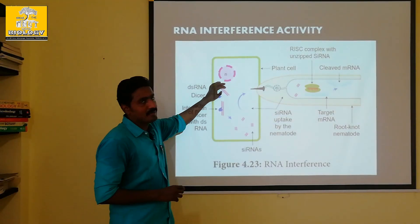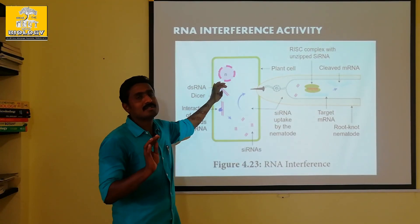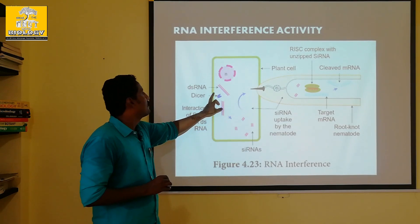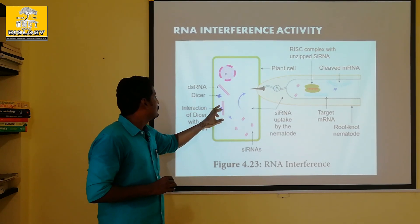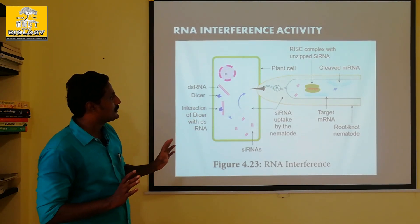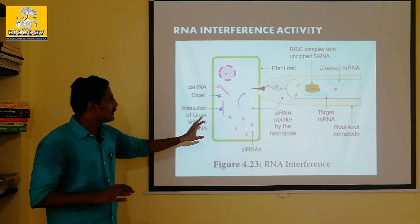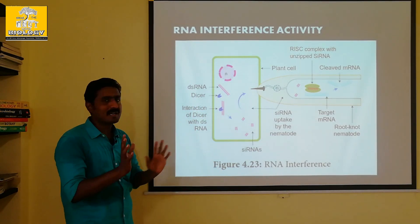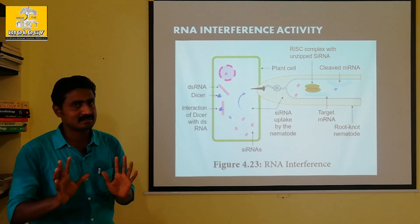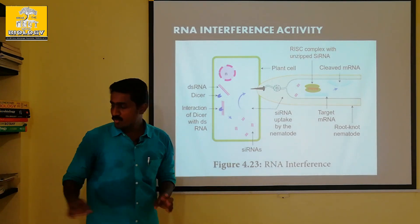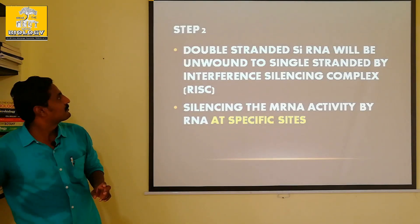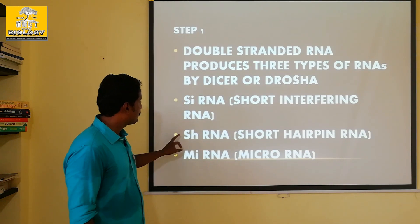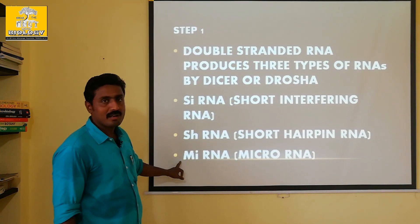So it is a double-stranded RNA, a DS-RNA. In the double-stranded RNA, there are 3 types of substances formed, depending upon the process. What are the 3 types? siRNA, shRNA, and miRNA.